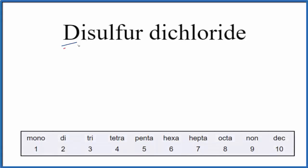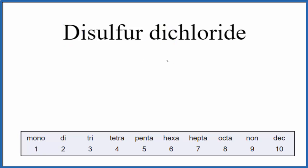Let's write the formula for disulfur dichloride. The first thing we note is we have the prefix 'di' on both of these substances. That tells us this is going to be a molecular compound. We also know it's a molecular compound because sulfur and chlorine are non-metals — two non-metals makes a molecular compound.